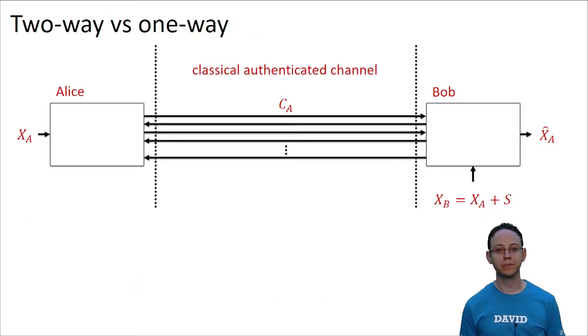OK. Let us investigate a little bit the possibilities available to Alice and Bob for reconciliation. First, they have access to the classical authenticated channel, which is bidirectional. So in full generality, a reconciliation protocol might consist in the exchange of messages in both directions.